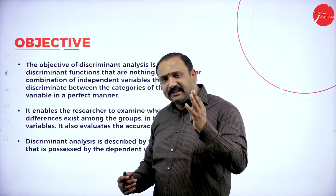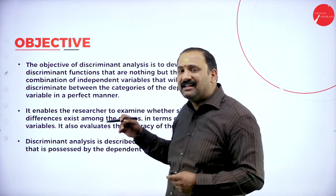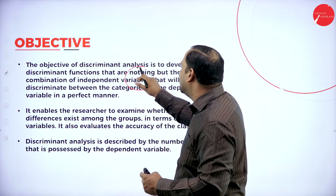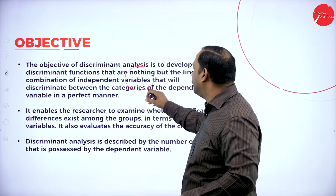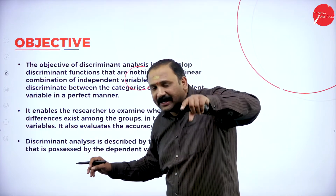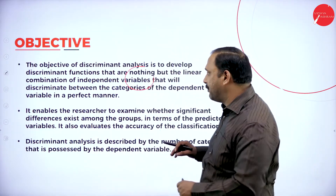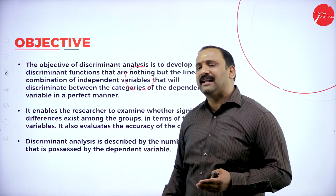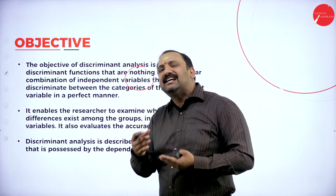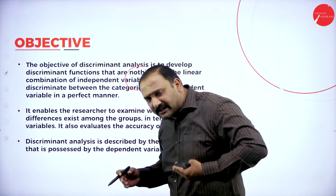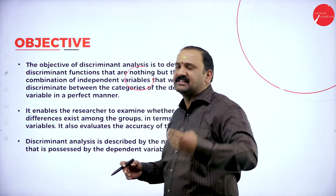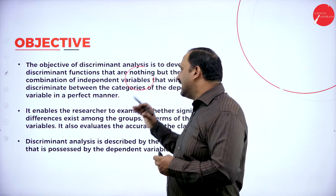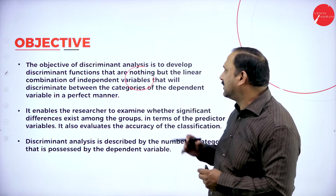The objective of discriminant analysis is to develop discriminant functions — nothing but the linear combination of independent variables — that will discriminate between categories of the dependent variable in a perfect manner. That phrase is very important. When we talk about discriminant analysis, they are all a linear combination factor that tries to categorize and build up the entire analysis of the variable in a perfect manner.